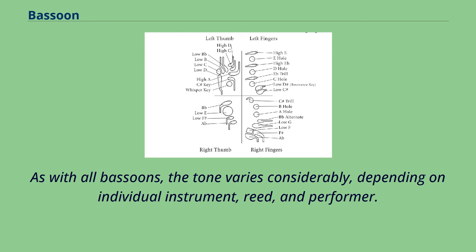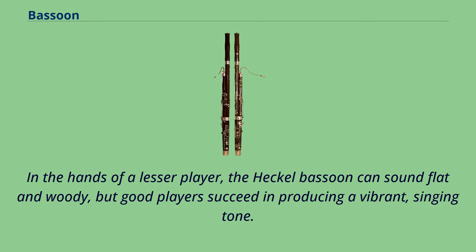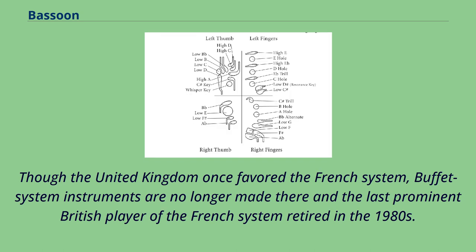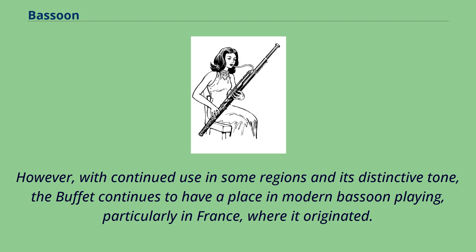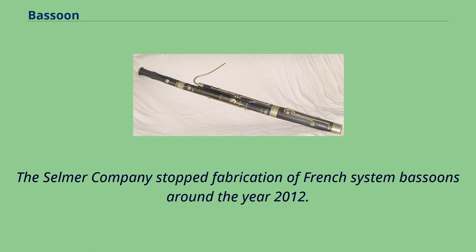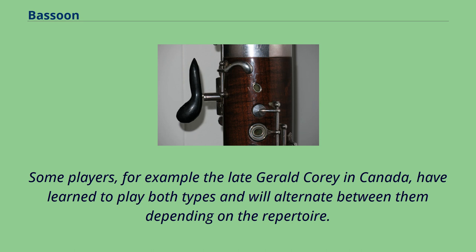Though the United Kingdom once favored the French system, buffet system instruments are no longer made there and the last prominent British player of the French system retired in the 1980s. However, with continued use in some regions and its distinctive tone, the buffet continues to have a place in modern bassoon playing, particularly in France, where it originated. Buffet model bassoons are currently made in Paris by Buffet Crampon and the Atelier Ducasse. The Selmer Company stopped fabrication of French system bassoons around 2012. Some players, for example the late Gerald Corey in Canada, have learned to play both types and will alternate between them depending on the repertoire.